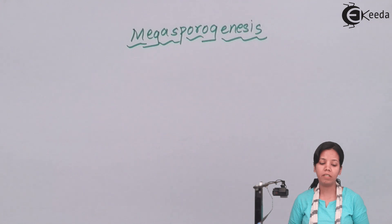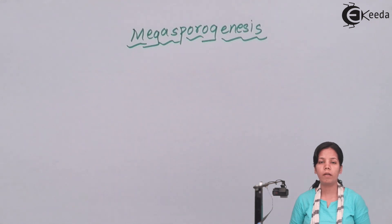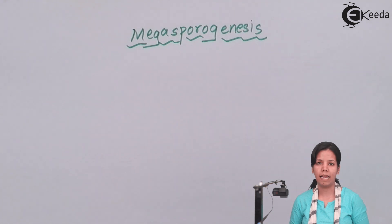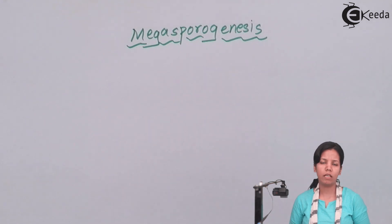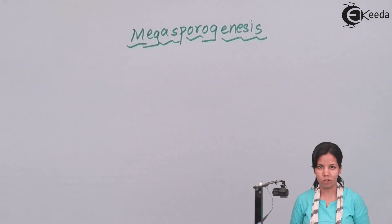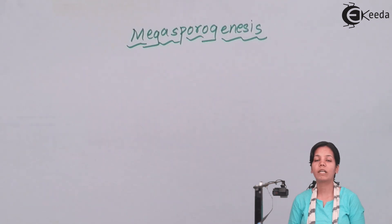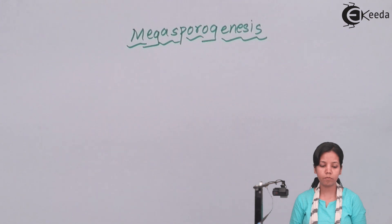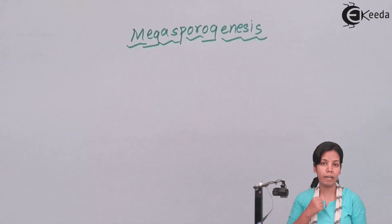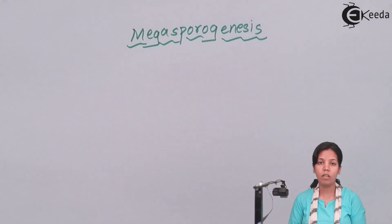Basically, your ovule or female gametophyte differentiates to form a mother cell — the Megaspore Mother Cell (MMC) — which further undergoes meiosis, that is reduction division, to form four haploid megaspores. Once four haploid megaspores are formed, this is termed the Megaspore Tetrad. One of these four megaspores will differentiate into the female gametophyte, or eventually form the egg cell.